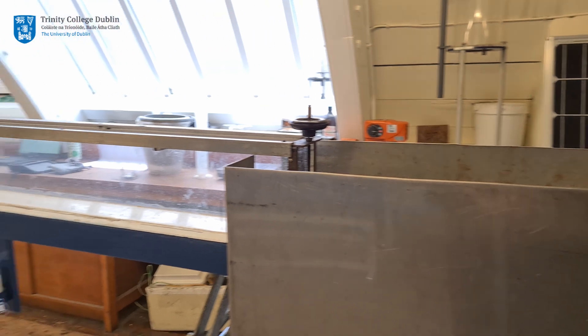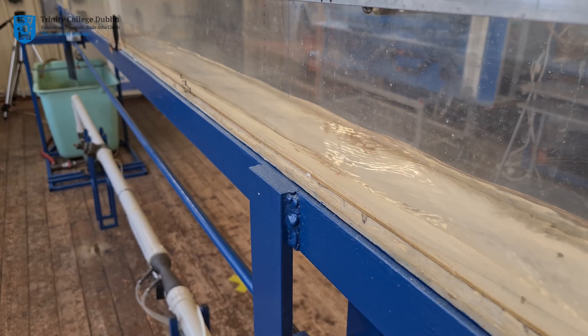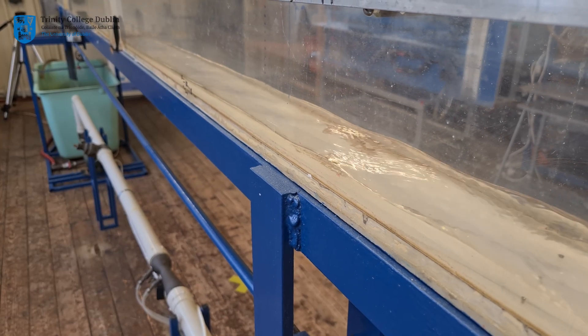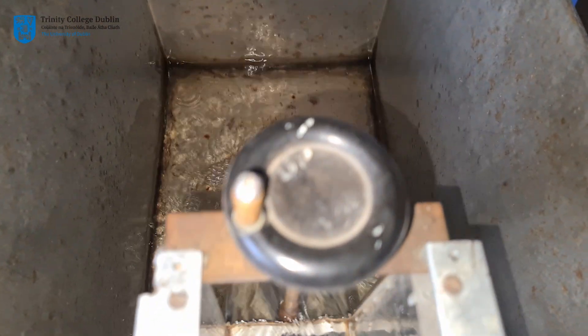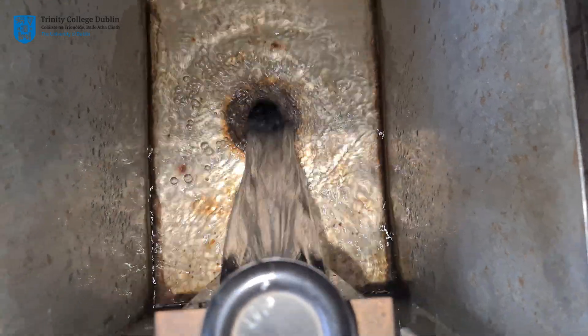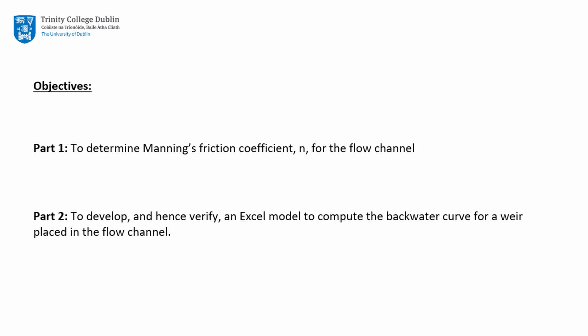This video will demonstrate two experiments using the flow channel within the Departmental Hydraulics Lab. The objectives are: Part 1, to determine Manning's Friction Coefficient for the flow channel; and Part 2, to develop and hence verify an Excel model to compute the backwater curve for a weir placed in the flow channel.